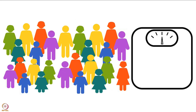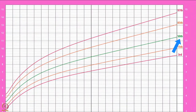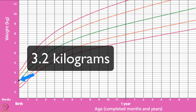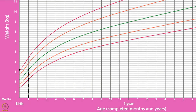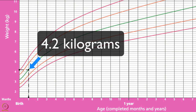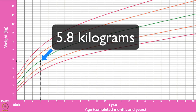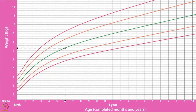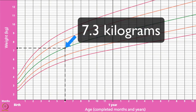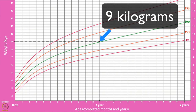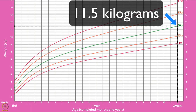Let's learn more about the average weight of a child, which is along the 50th percentile line. The average birth weight of a girl is 3.2 kgs. At 1 month her average weight is 4.2 kgs, at 3 months it is 5.8 kgs, at 6 months it is 7.3 kgs, at 1 year it is 9 kgs, and at 2 years it is 11.5 kgs.